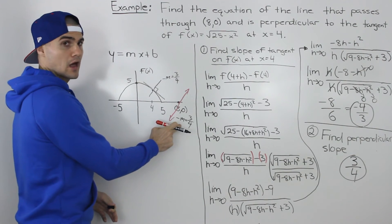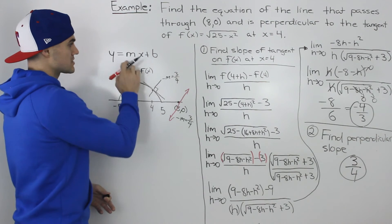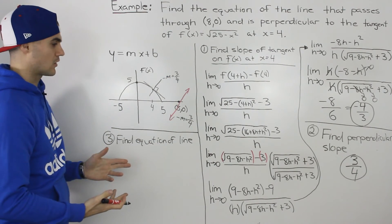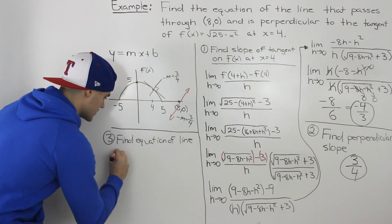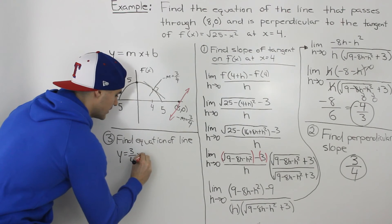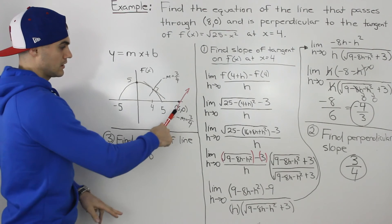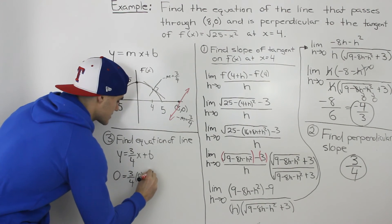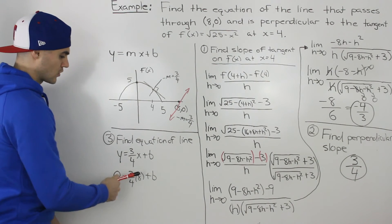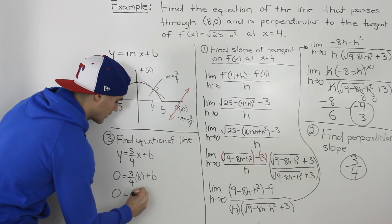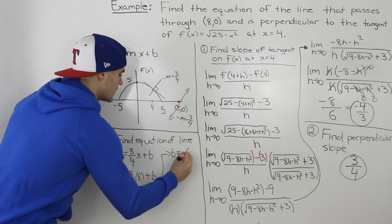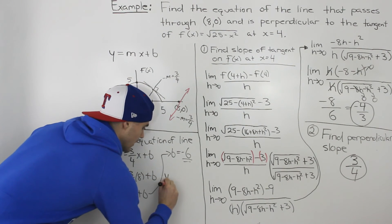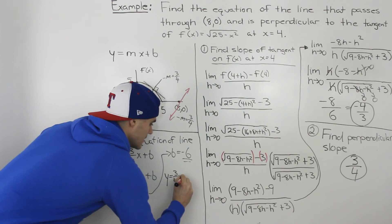Now that we have the slope of our line and a point it goes through — (8, 0) — we can find the equation. Our third and final step is to find the equation of this line in y = mx + b form. The slope m is 3 over 4, so we write y equals 3 over 4 x plus b. To solve for b, we plug in the coordinate (8, 0): 0 for y and 8 for x. Three over 4 times 8 gives us 6, so 0 equals 6 plus b, which means b equals negative 6. Our final answer is y equals 3 over 4 x minus 6.